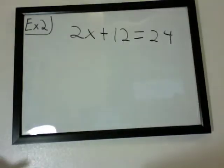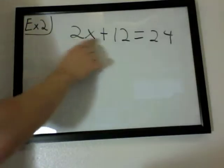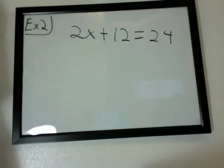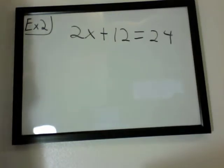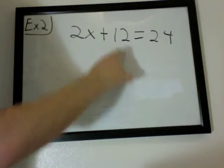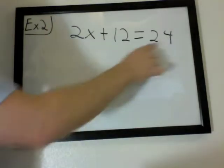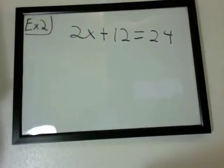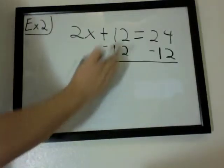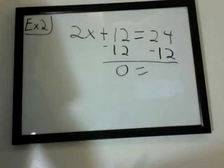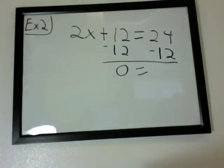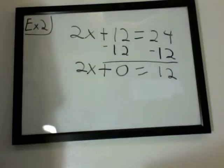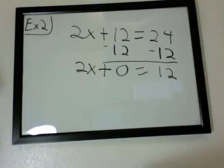Example number 2 we have here is 2x plus 12 equals 24. So what we need to do is get this x by itself. Let's take care of the lower operations first, like adding and subtracting. We have plus 12 here. We can move that to the other side of the equation. In order to do that, do its opposite operation, which would be subtraction. So subtract both sides from 12, do your subtraction, that equals 0, bring down your equal sign, then 24 minus 12, and then bring down your 2x. So you can leave the 0 off and you're left with 2x equals 12.